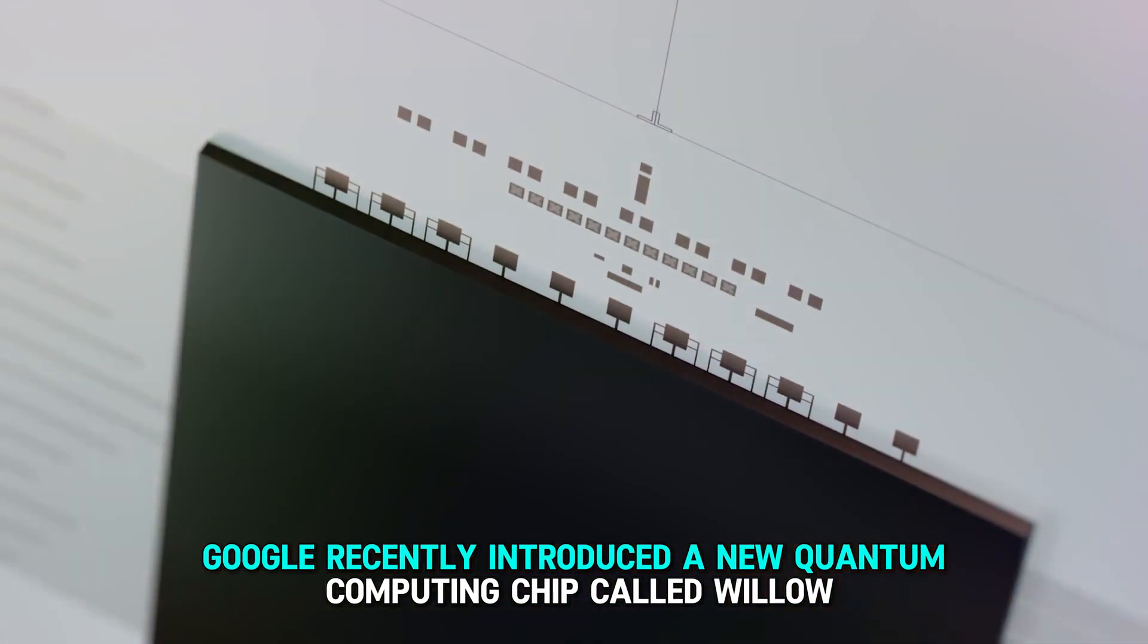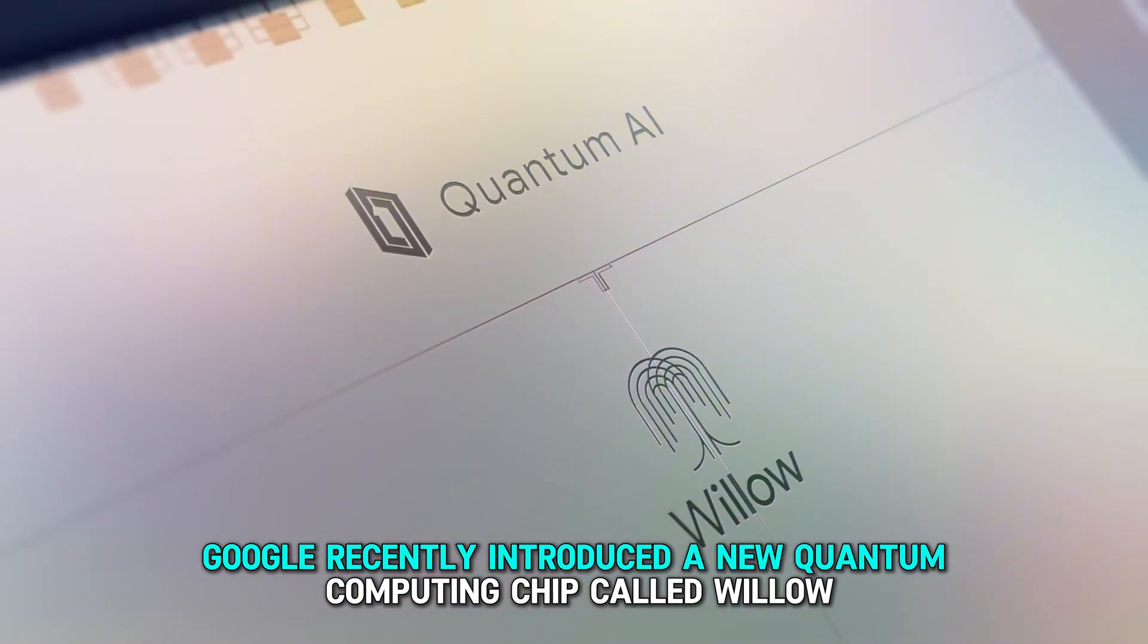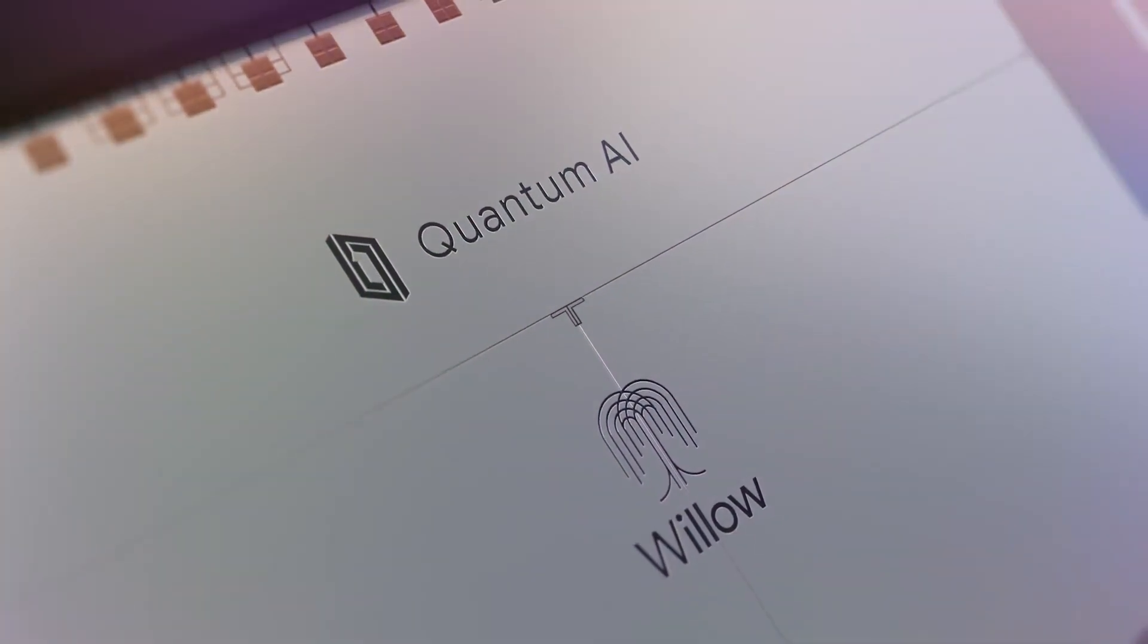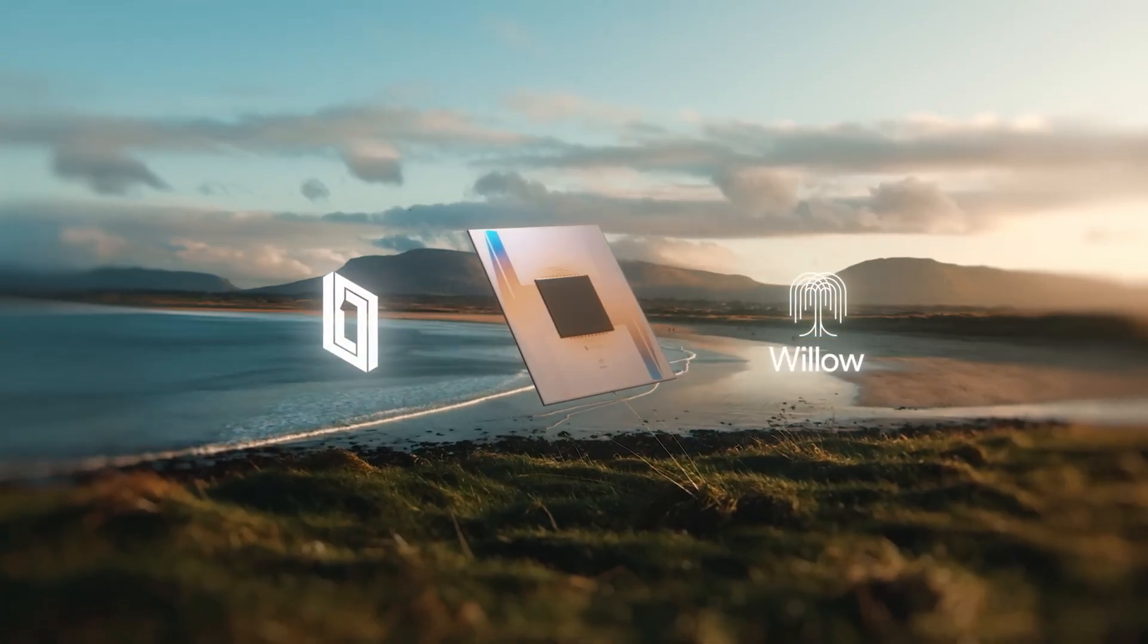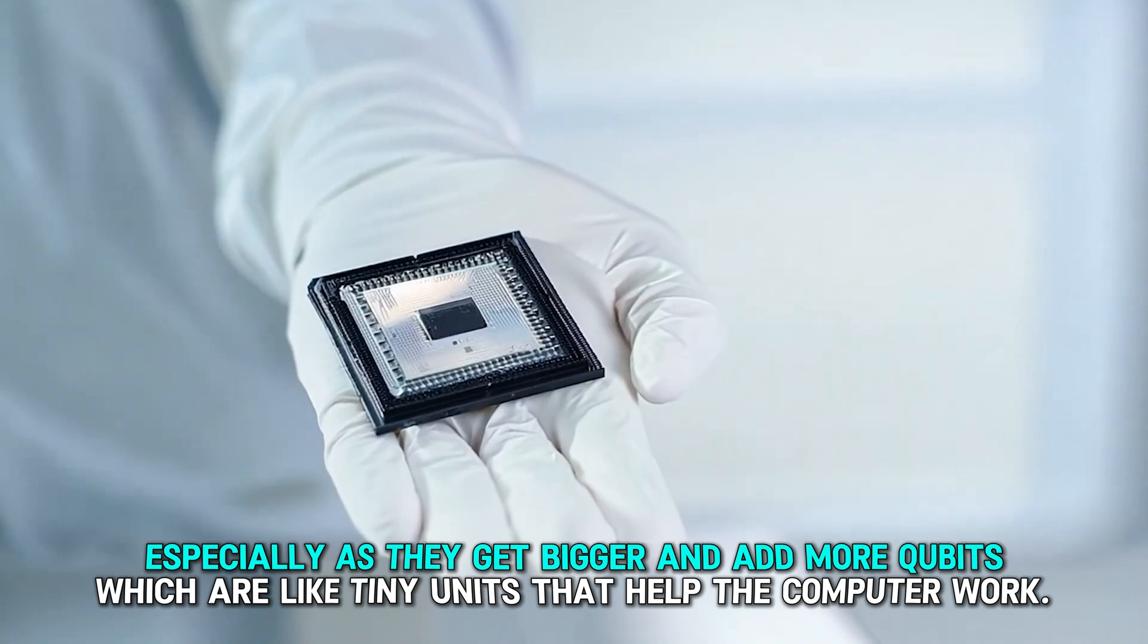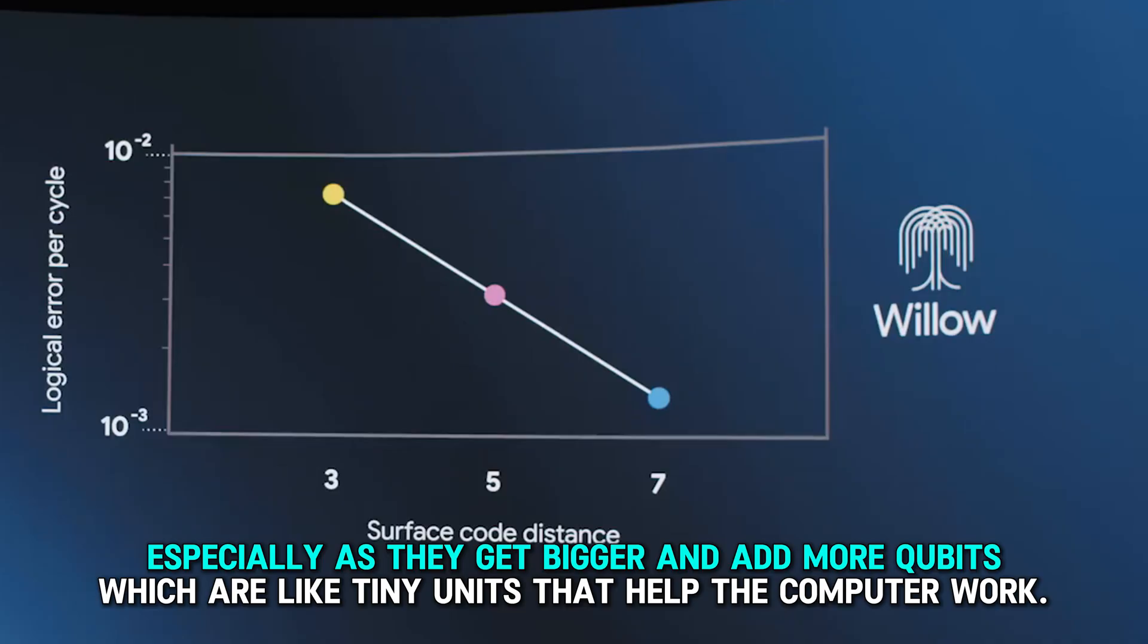Google recently introduced a new quantum computing chip called Willow. This chip is a big deal because it makes quantum computers better and more reliable, especially as they get bigger and add more qubits, which are like tiny units that help the computer work.